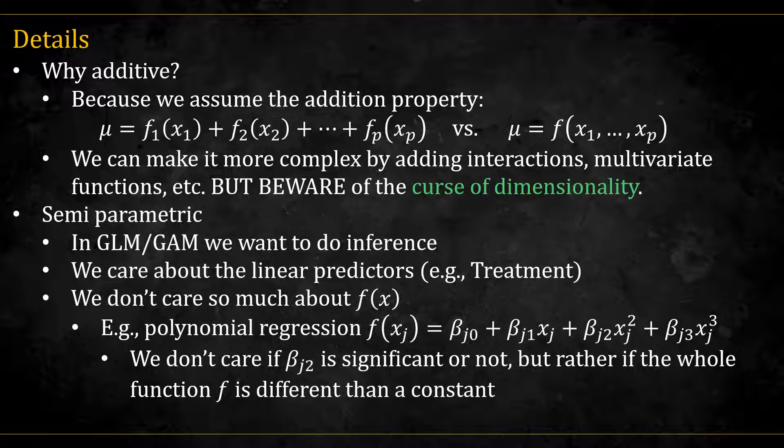Another point is that these models can be considered semi-parametric. The main reason to do GLM or GAM is for inference, and we will usually still care about some linear predictors, for example a treatment group variable. But we don't care so much for f of x.